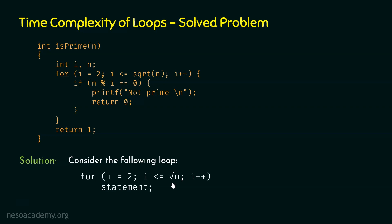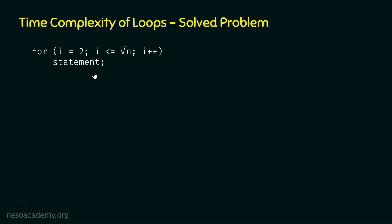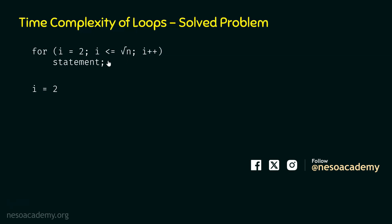What is the time complexity or the frequency count of this for loop with a simple statement? We need to determine tn for this for loop. In order to find tn, we need to analyze each iteration and observe the values of i carefully. In iteration 1, the value of i is 2. We compare i with square root of n — let's say 2 is less than square root of n, so the condition is satisfied. Therefore, the simple statement within the for loop will execute.